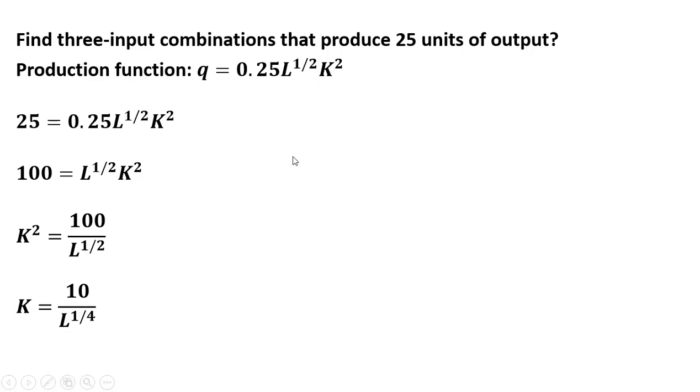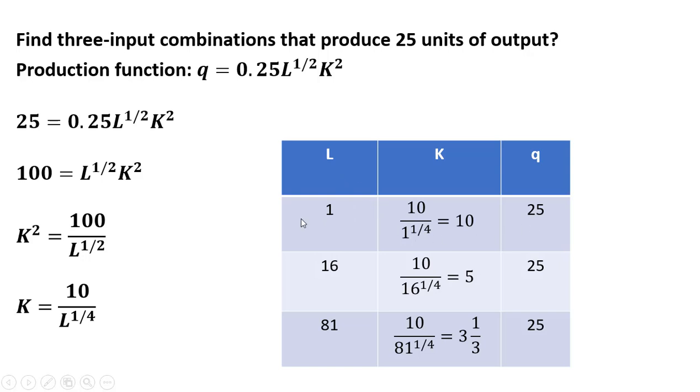We want to now find three input combinations that produce 25 units of output. I'm just going to plug in various values for L to get the corresponding value of K, and that will be one of the input combinations. Putting together a table here, let's start. If L is 1, K is 10, and that will be one input combination that produces 25 units of output. We could double-check our math by plugging 1 in for L up here and 10 in for K. And if you do that and simplify, q will be 25.